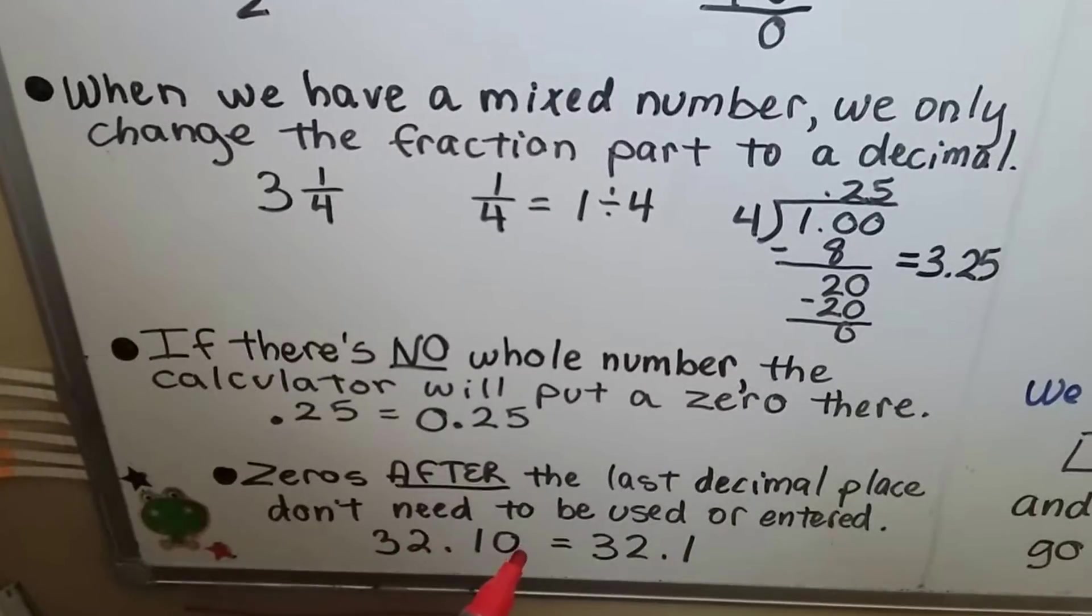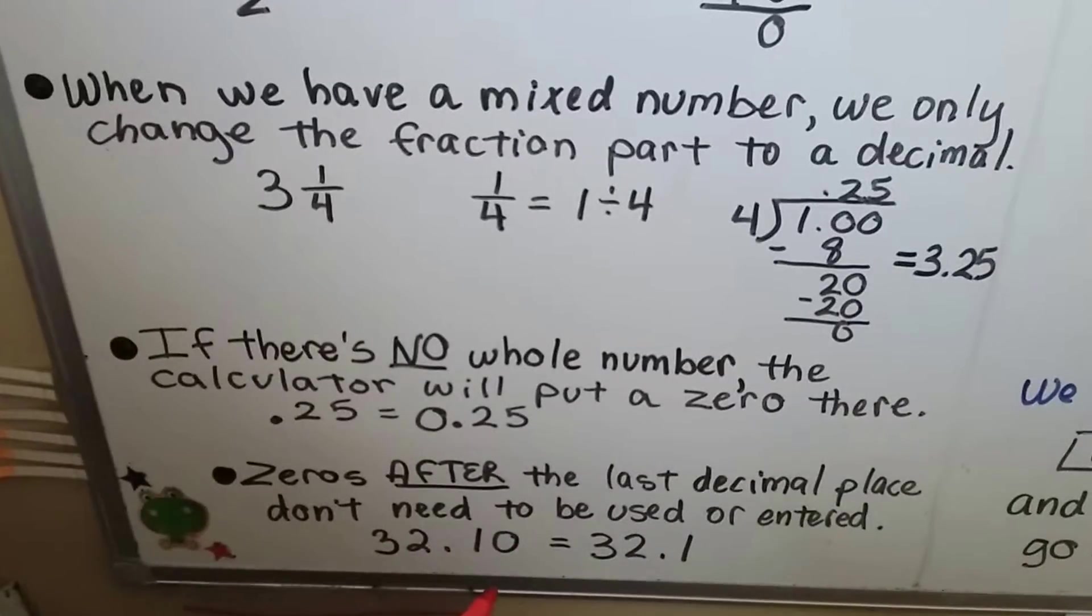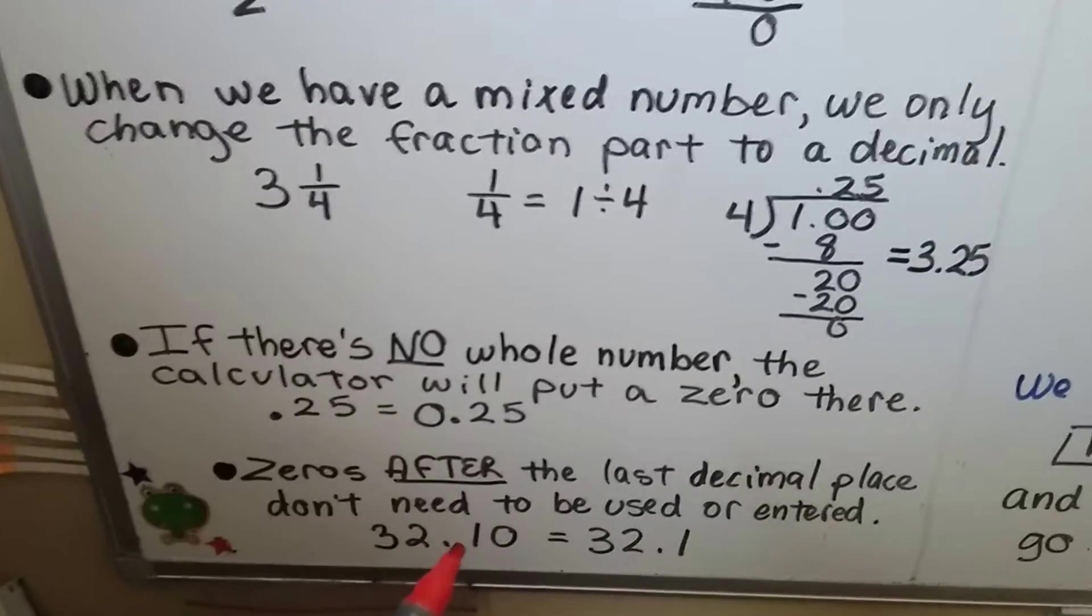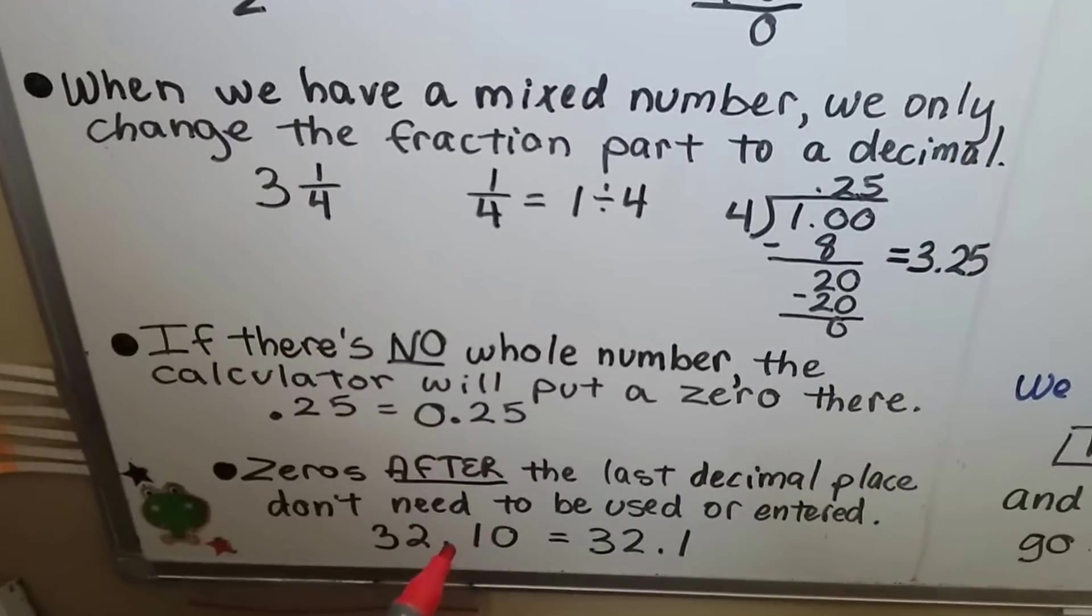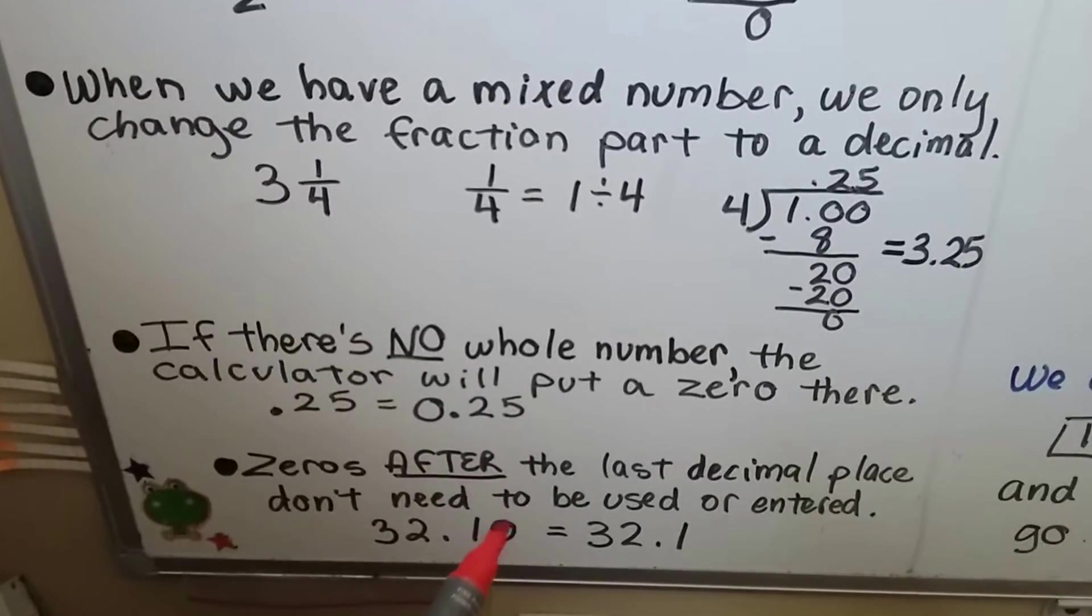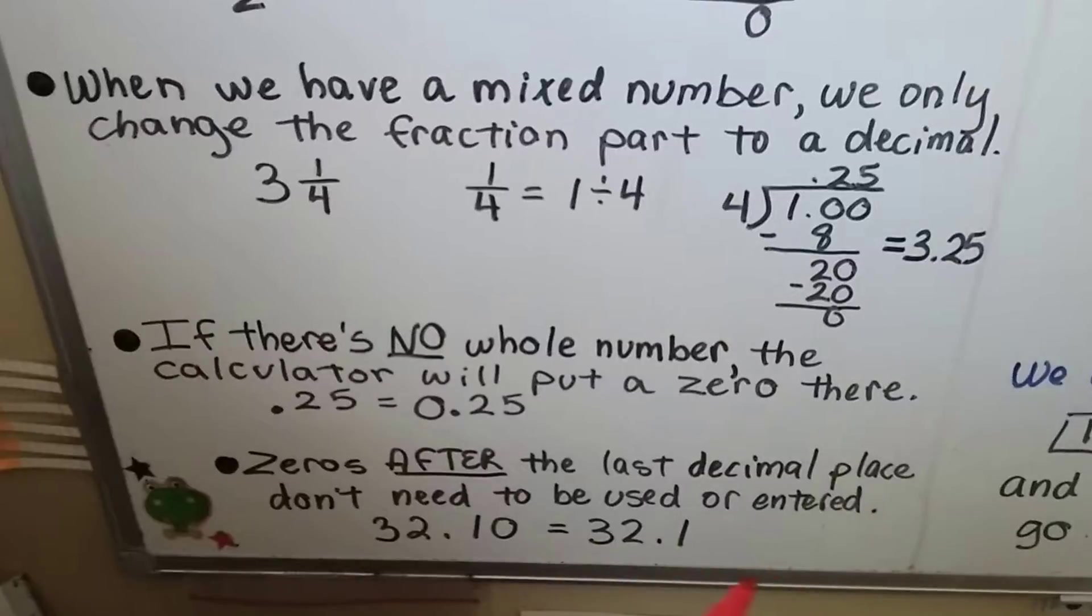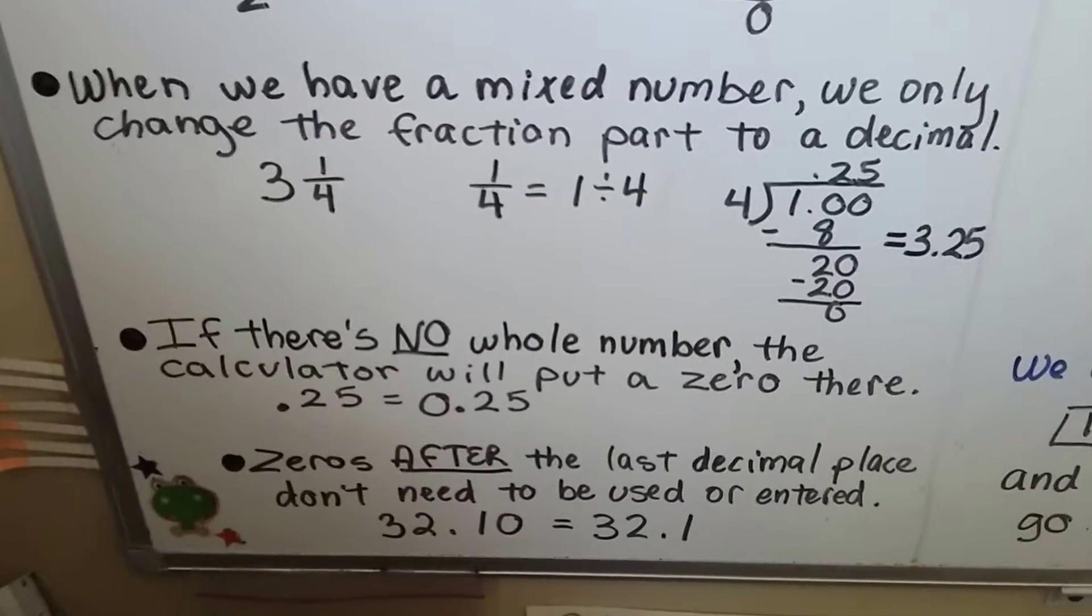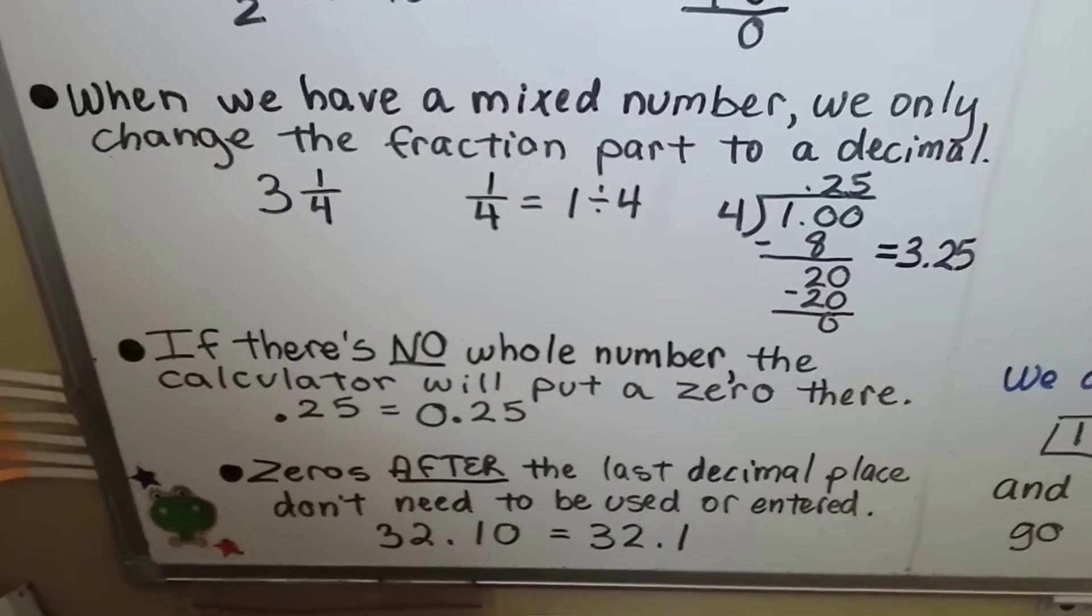Same thing if it's on the back end. Zeros after the last decimal place don't need to be used or entered into the calculator. 32 and 1 tenth is the same thing as 32 and 10 one hundredths. We can put as many zeros behind this last decimal place value as we want, and it's still going to be equivalent to 32.1 or 32 and 1 tenth.